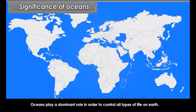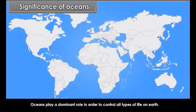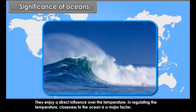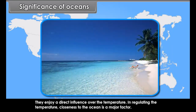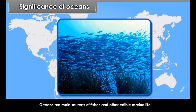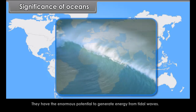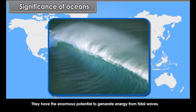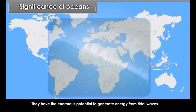Oceans play a dominant role in controlling all types of life on Earth. They have a direct influence over temperature, and closeness to the ocean is a major factor in regulating temperature. They are the storehouse of minerals, the main sources of fish and other edible marine life, and have enormous potential to generate energy from tidal waves. Oceans also provide a free and permanent route for travel and trade.